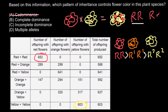Now that we know red and yellow are both true-breeding, let's look at the cross of red and yellow. 100% of what we get are plants with orange flowers. This gives us very important information: the genotype of these orange flowers consists of one allele from the red parent and one allele from the yellow parent.